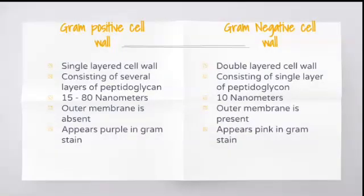The next is: differentiate between gram-positive cell wall and gram-negative cell wall. Gram-positive cell wall is a single-layered cell wall whereas gram-negative is a double-layered cell wall. Gram-positive cell wall consists of several layers of peptidoglycan whereas gram-negative cell wall consists of a single layer of peptidoglycan.